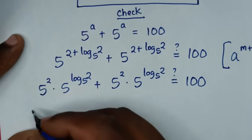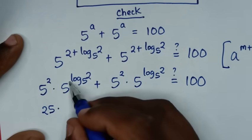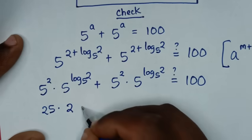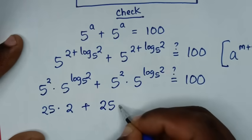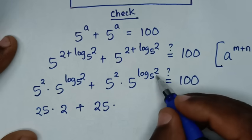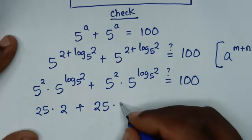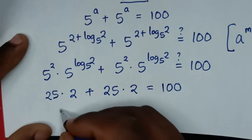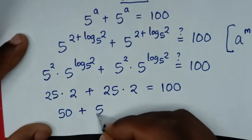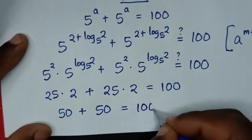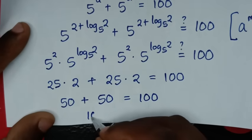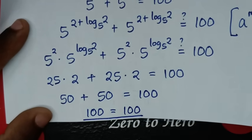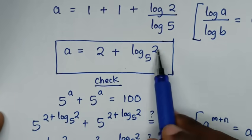Then 5 squared is 25, times 5 power of log base 5 of 2 — this part equals 2. Plus 5 squared which is 25, times 5 power of log base 5 of 2, which also equals 2. So here times 2 is equal to 100. From 25 times 2 is 50, plus 25 times 2 is 50, is equal to 100. Then 50 plus 50 is 100, which equals 100. So left side and right side are equal, confirming it is true that a is equal to 2 plus log base 5 of 2.